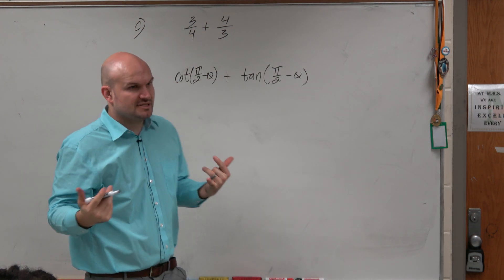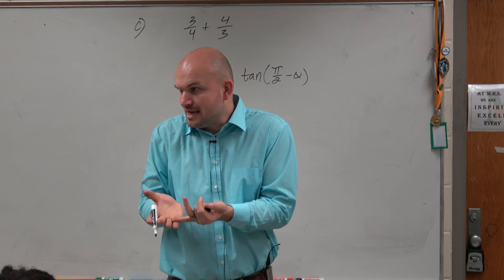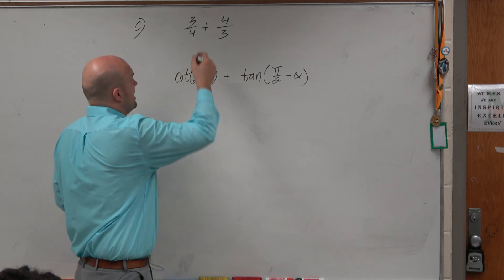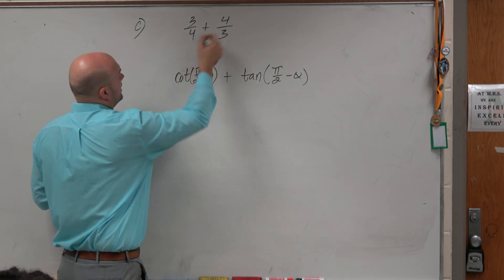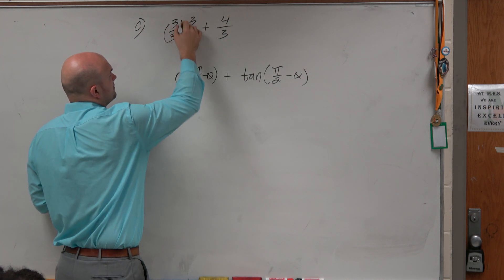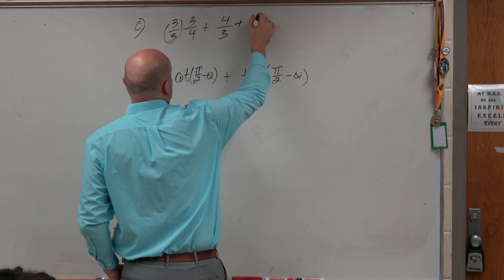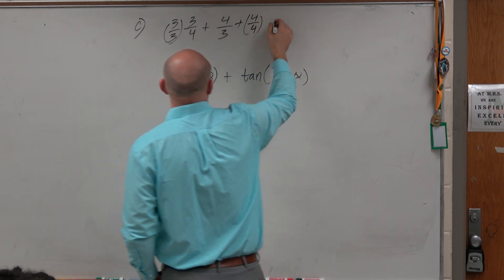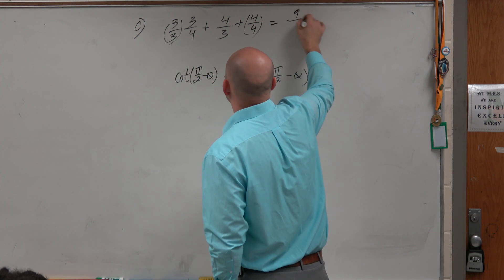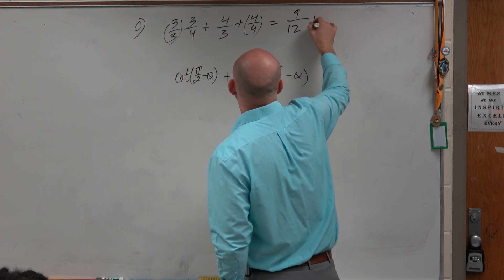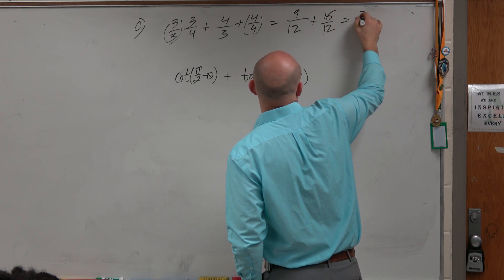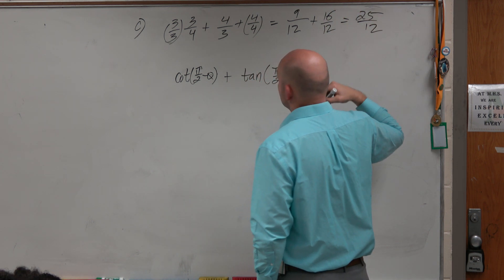If I'm trying to add fractions and they have different denominators, I got to get common denominators. So I would multiply by 3 over 3 plus 4 over 4, which would give me 9 over 12 plus 16 over 12, which is 25 over 12.